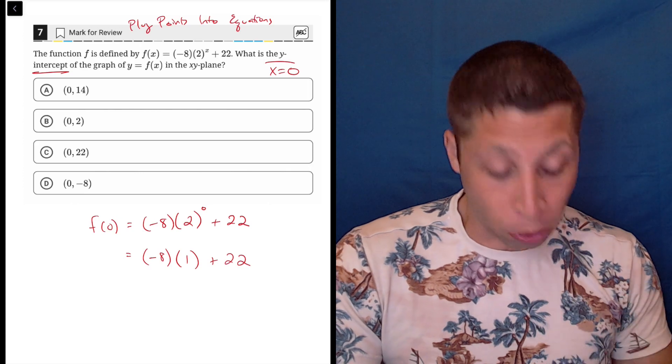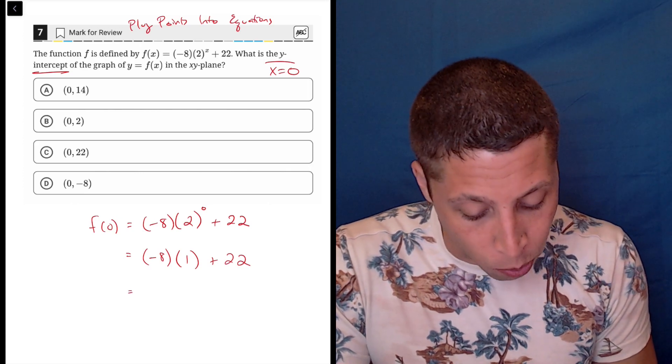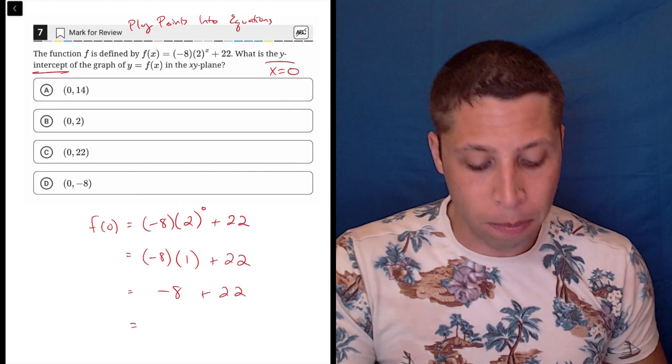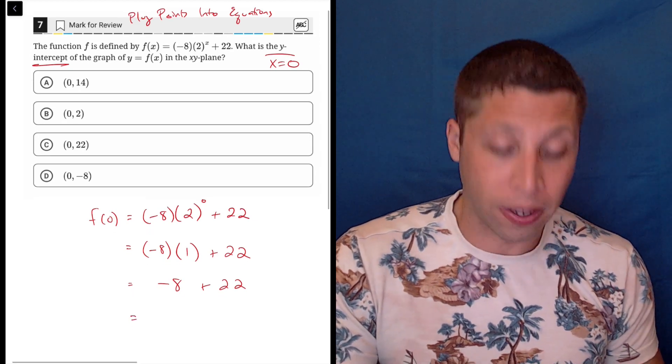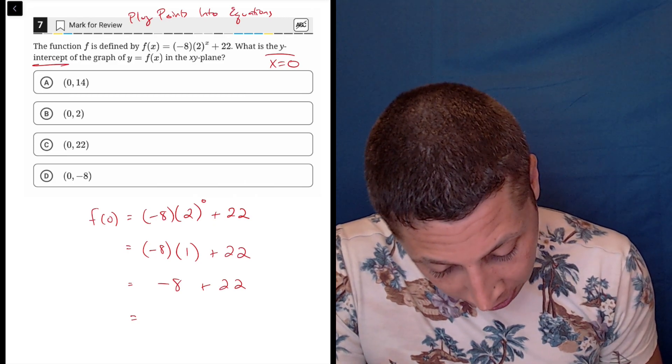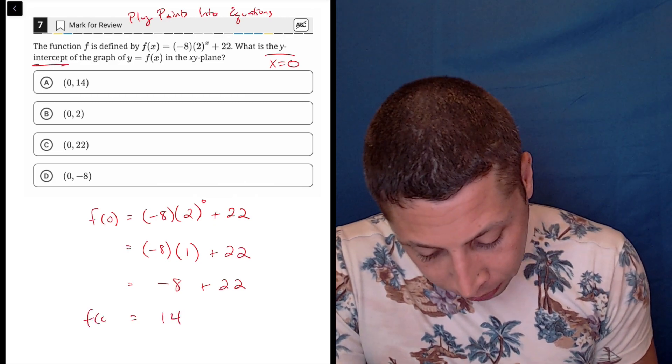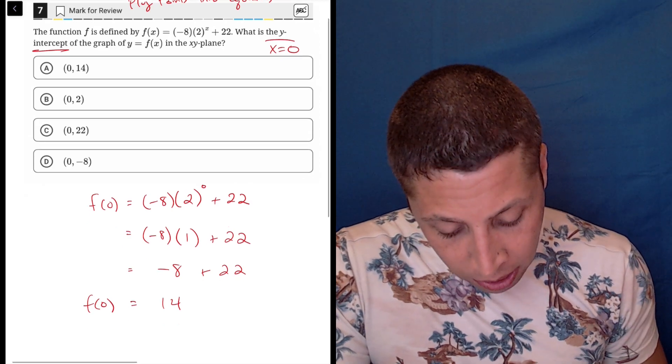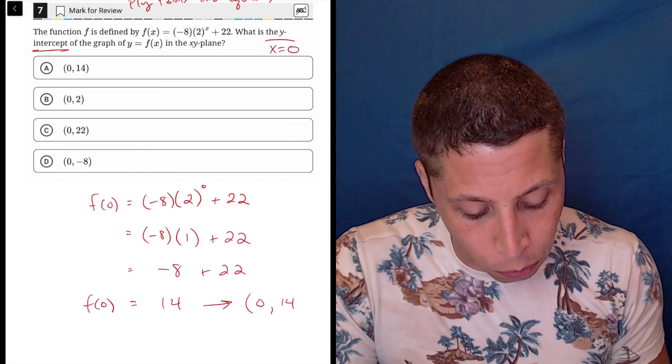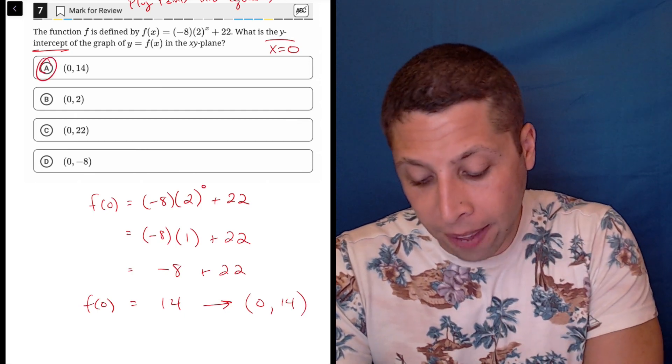Now we move through and do multiplication. Negative eight times one is negative eight. And we finish it up with addition. Negative eight plus 22 is the same as 22 minus eight, which is 14. So there you go. F of zero is 14, so that is function notation telling us that the point (0, 14) is the y-intercept, and that is choice A.